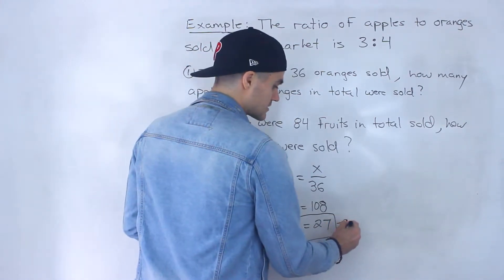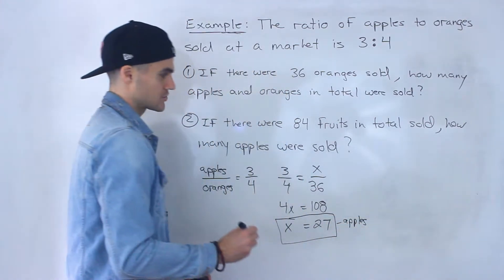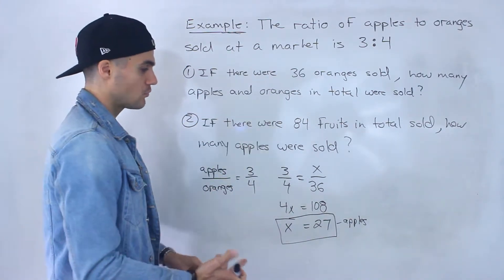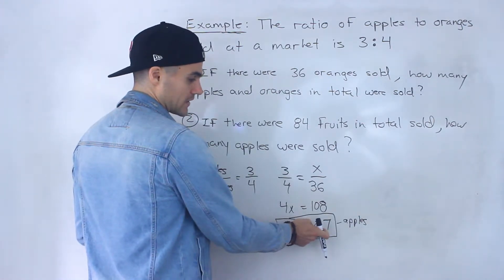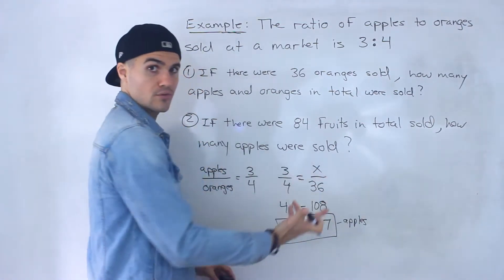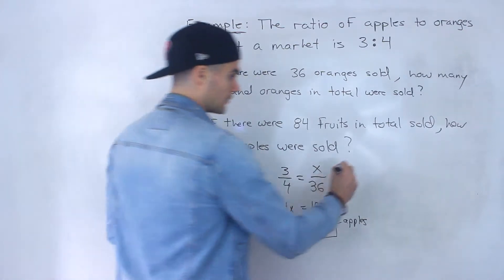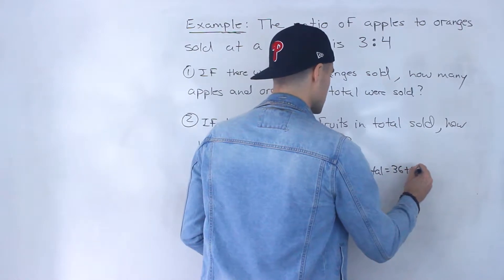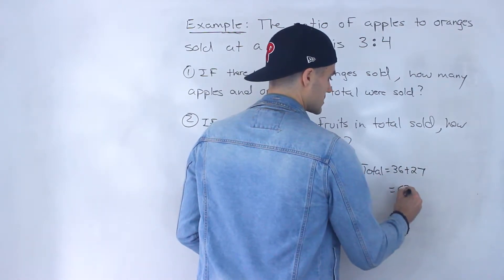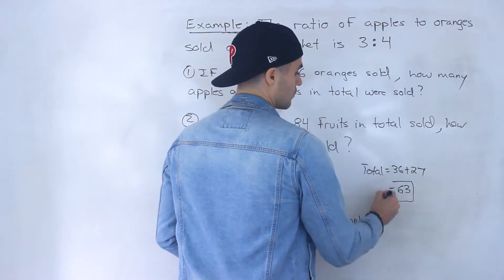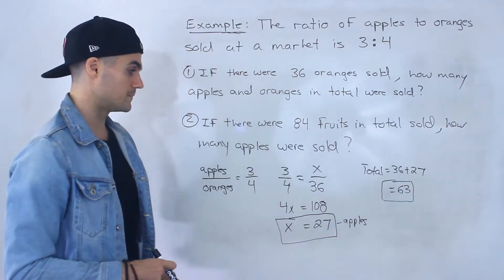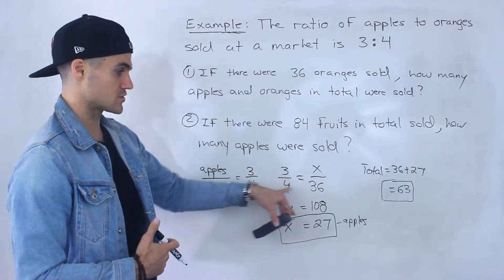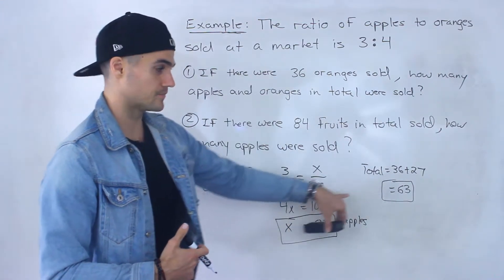Well, this represents the number of apples that are sold. But notice they're asking for the total of apples and oranges. So what we would have to do is add this 27 apples to this 36 oranges sold. When you do that, the total would be 36 plus 27, which would give us 63. So that there is the answer to number one.